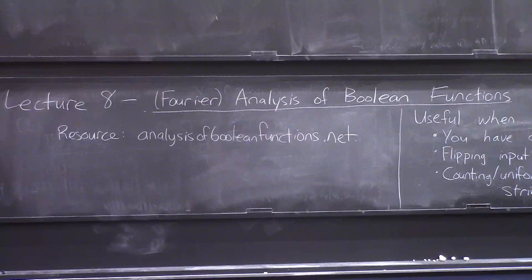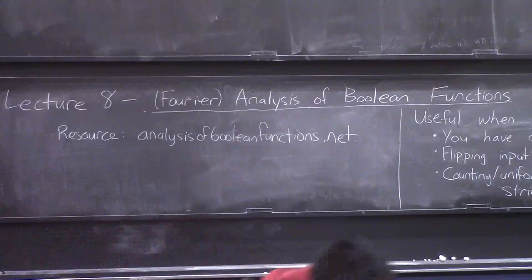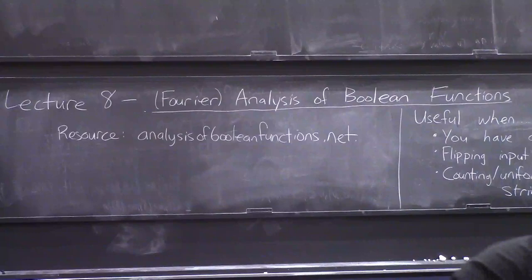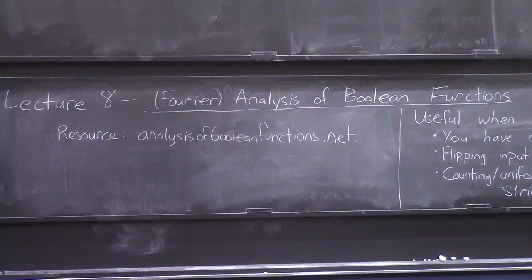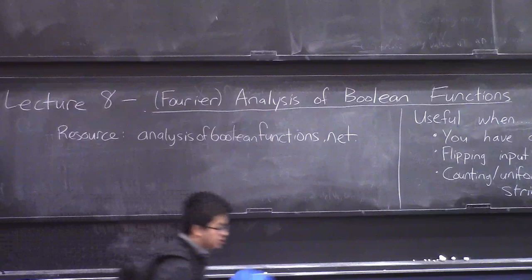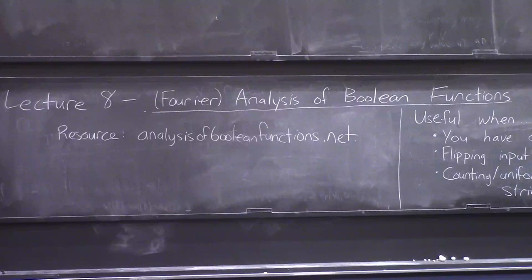Fourier analysis of Boolean functions is a major tool in quite a few areas of CS theory — both areas we're going to talk about in this course, like quantum computing, communication complexity, learning theory, hardness of approximation, PCPs, and pseudorandomness — and also other topics we won't cover, like concrete complexity, random graph theory, additive combinatorics, metric spaces, and social choice. So I hope you'll find some occasion to use this set of tools in your life.